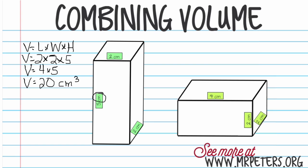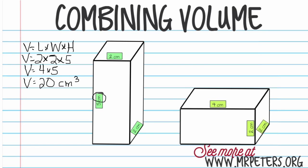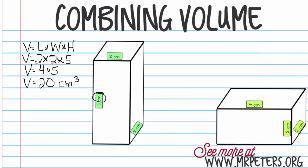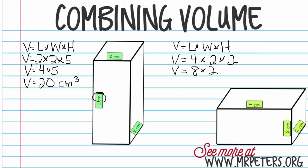Now for the other prism, doing the same thing: volume equals length times width times height. Length is four centimeters, width is two centimeters, and height is two centimeters. Volume equals four times two, which is eight, times two — so the volume equals sixteen centimeters cubed.